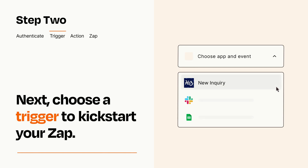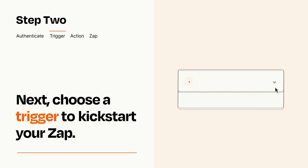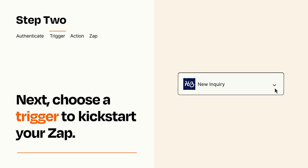Now let's set up your trigger, which is the event that starts your Zap. Pick the trigger event that you want from the list. When you set up this step, your Zap will pull in test data from your trigger app that you'll see later when setting up your action app.